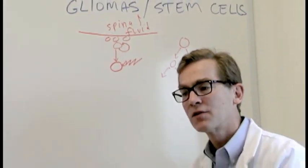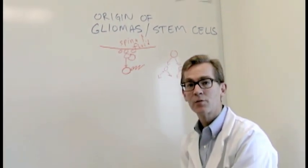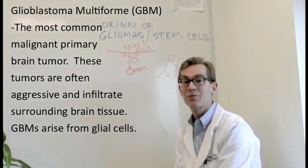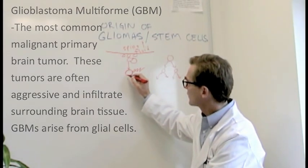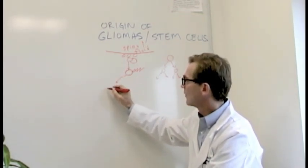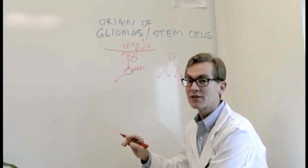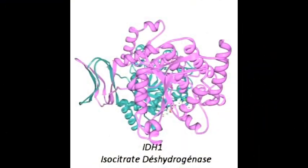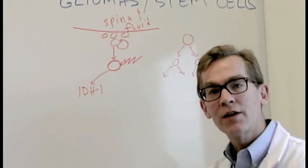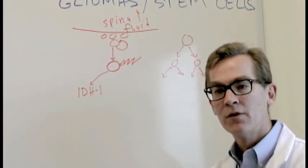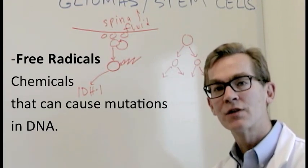We believe that the most malignant types of gliomas called glioblastomas can arise in two general thematic ways. One is by starting off usually in younger patients with a mutation of a gene called isocitrate dehydrogenase 1 or IDH1. And this gene may have a very early impact on the free radical production or ability of the cell to tolerate free radicals, which are chemicals that can cause mutations in DNA.